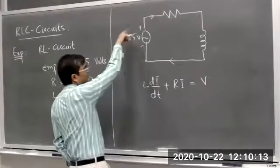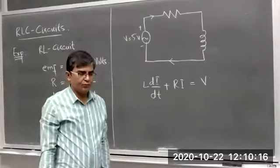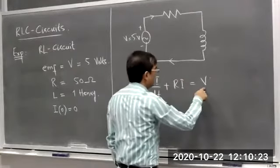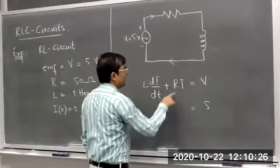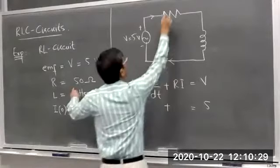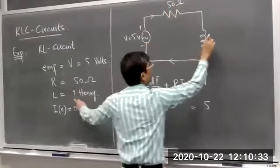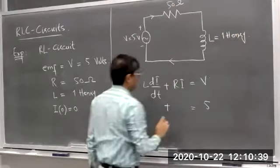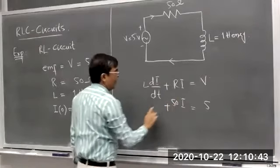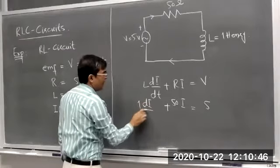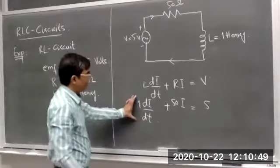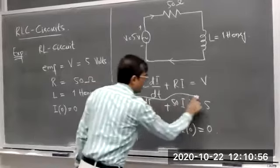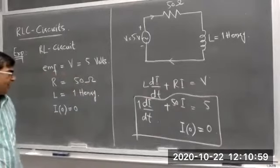So V is 5 volts, R is 50 ohms, and inductance L is 1 henry. This gives us: 50I + 1·dI/dt = 5, along with no current at time zero. This is your mathematical model — a linear first-order ODE — which you have to solve to find I.